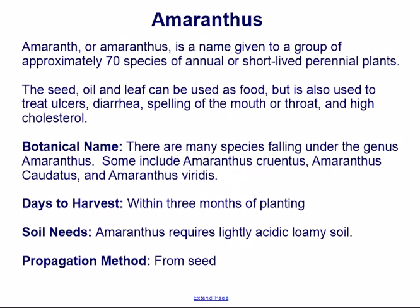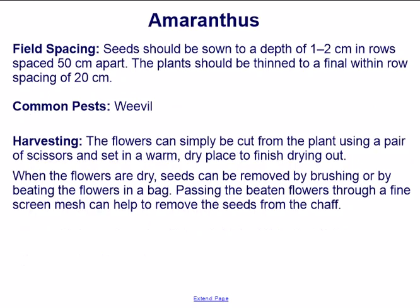There are many species falling under the genus Amaranthus, including Amaranthus cruentus, Amaranthus caudatus, and Amaranthus viridis. Days to harvest: within three months of planting. Amaranthus requires lightly acidic loamy soil. Propagation is from seed, sown to a depth of one to two centimeters in rows spaced 50 centimeters apart.